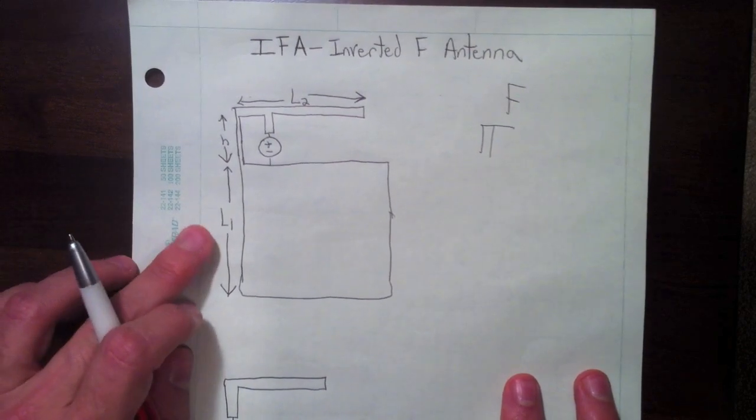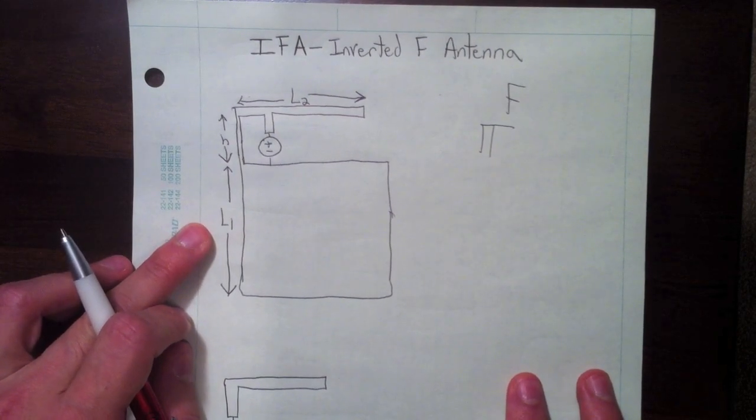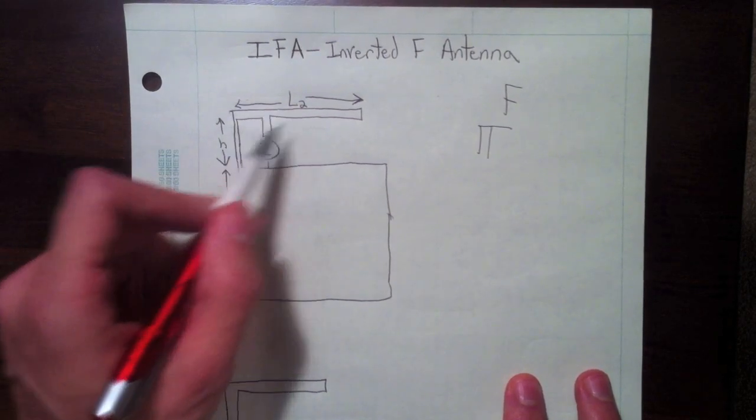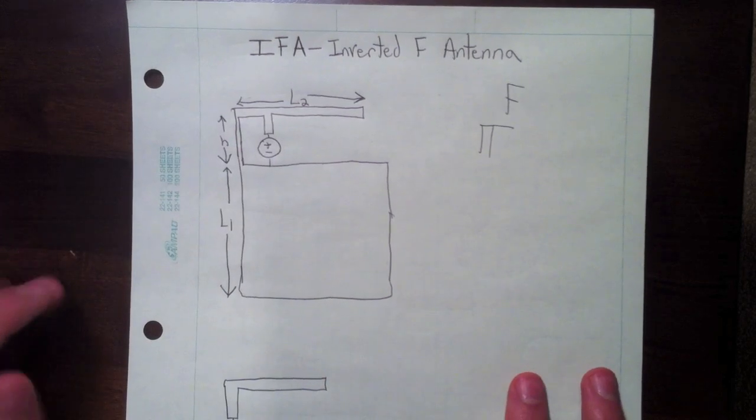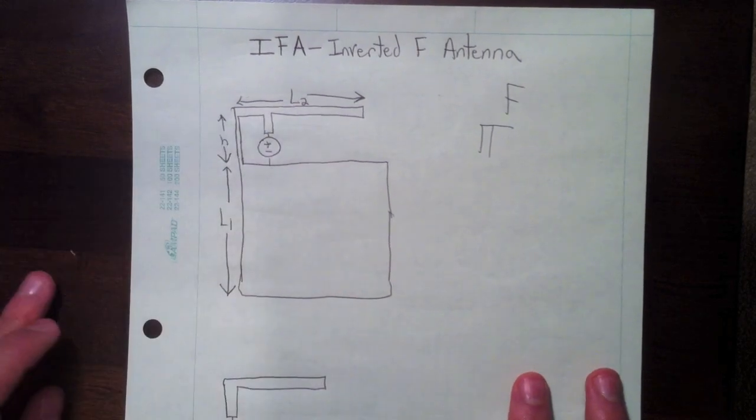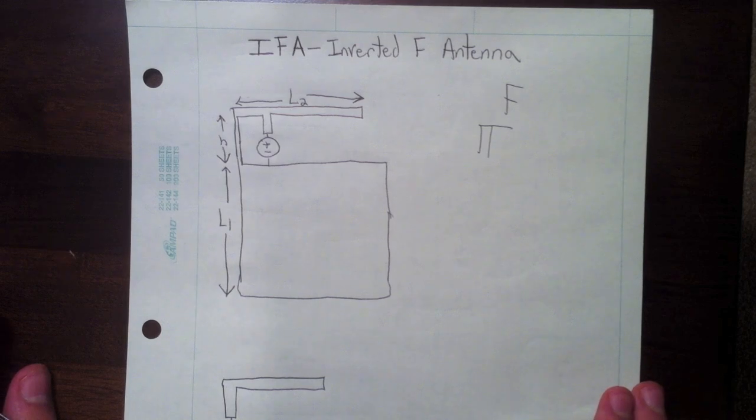And we'll see this L1 tends to want to be about lambda over 4, and the length from the source to the end of the arm up here tends to be a little bit less than lambda over 4.